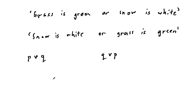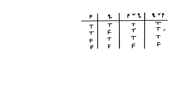We can see this by looking at the truth table for P or Q and Q or P. Notice that the column for P or Q has TTTF and the column for Q or P is the same thing, TTTF. When two statement forms have the same truth values for each possible combination of truth values for the constituent statement variables, then the statement forms are said to be logically equivalent.